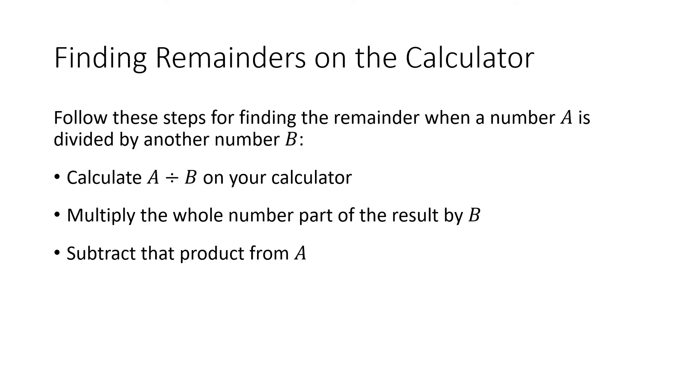So just to remember, when we were looking for a remainder, this is the way that we compute them on our calculator. So we have two numbers, A and B, and we want to divide A by B and figure out the remainder. We actually just do that division on our calculator. That's usually going to give us a decimal. We take the whole number part of that, multiply by B, and then that'll give us a number that's close to the number A. We subtract, and that difference is going to give us the remainder.